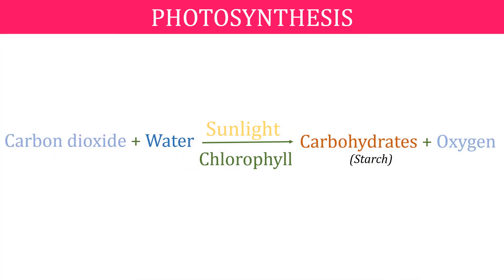During photosynthesis, chlorophyll-containing cells of leaves, in the presence of sunlight, use carbon dioxide and water to synthesize carbohydrates, that is starch. The process can be represented as an equation: carbon dioxide plus water gives carbohydrates (starch) and oxygen, in the presence of sunlight with the help of chlorophyll. During the process, oxygen is released and carbohydrates ultimately get converted into starch.